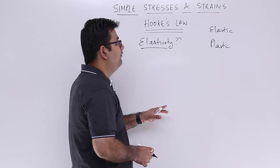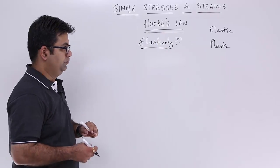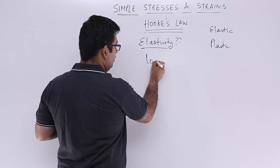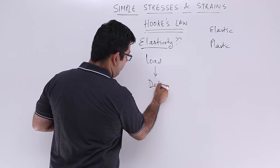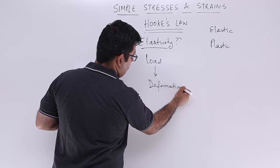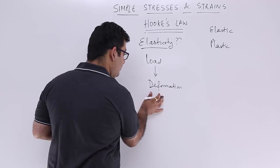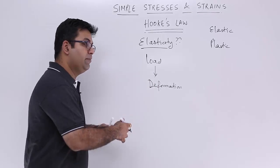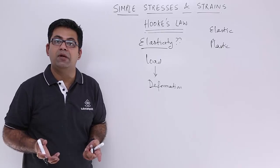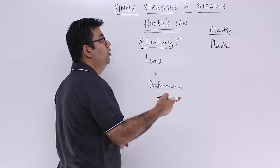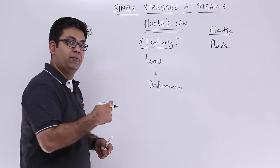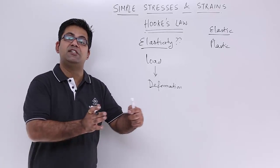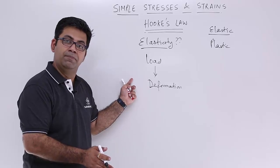Elasticity has something to do with both of them. When you put a load onto a body, it gets deformed. Now, this deformation — if you remove the load and the deformation vanishes — then the deformation that occurred was elastic. The material of the body goes back to its original shape that it had before the loading began.